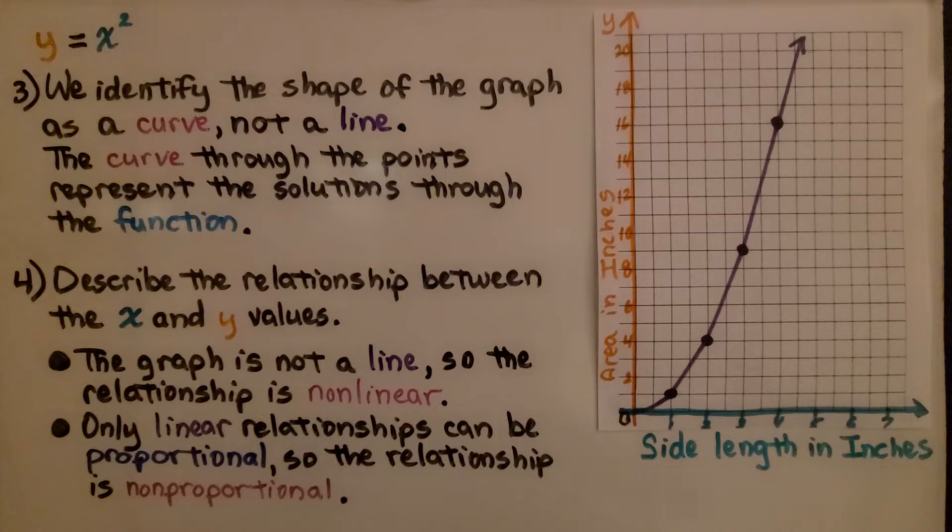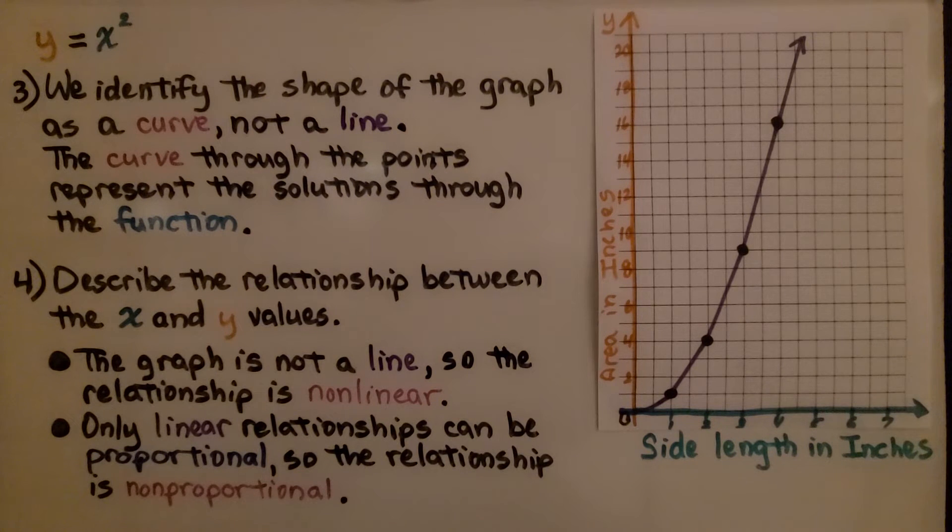Next we describe the relationship between the x and y values. The graph is not a line, so the relationship is non-linear. Only linear relationships can be proportional, so the relationship is non-proportional. It's non-linear, non-proportional.